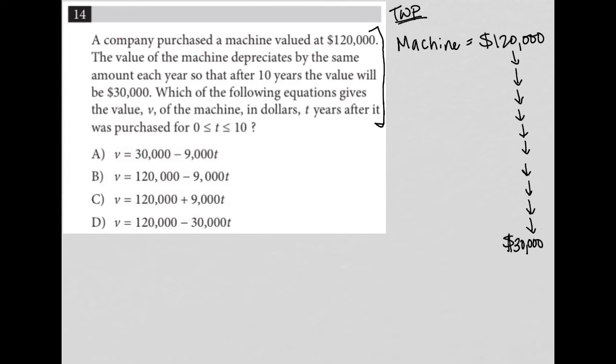So it drops by a total of $90,000. Here's the reading between the lines. When you translate, you're allowed to do this. If I'm going from $120,000 to $30,000, that means it decreased a total of $90,000.